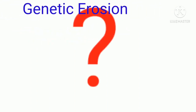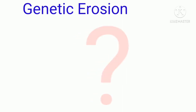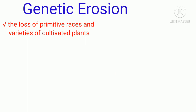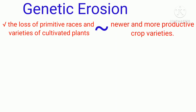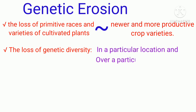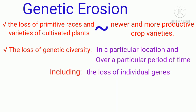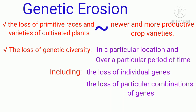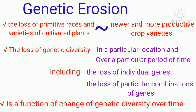Genetic erosion is the loss of primitive races and varieties of cultivated plants as they are gradually replaced in agriculture with newer and more productive crop varieties. It has also been defined as the loss of genetic diversity in a particular location over a particular period of time, including the loss of individual genes and the loss of particular combinations of genes, such as those manifested in landraces or varieties. In simple terms, genetic erosion is defined as a function of change of genetic diversity over time.